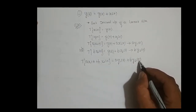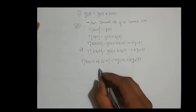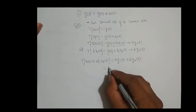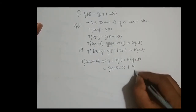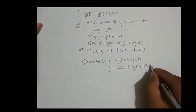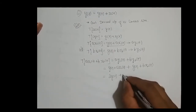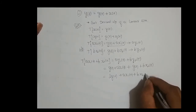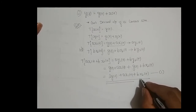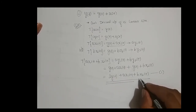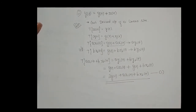This equation comes from the linearity property. So the desired output — equation 1 — for the combined input a times x1 of t plus b times x2 of t is a times y1 of t plus b times y2 of t. This is what I am expecting if the system is linear.